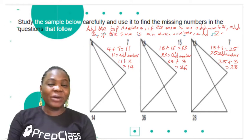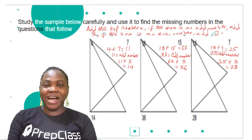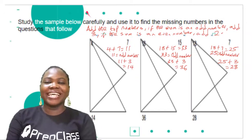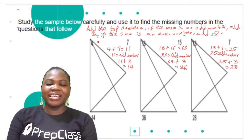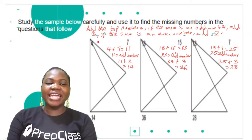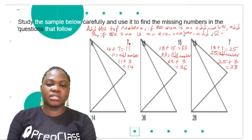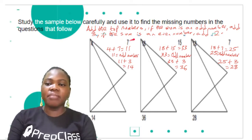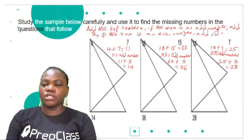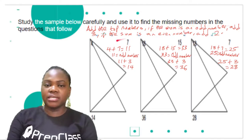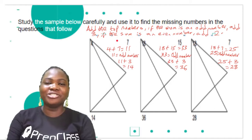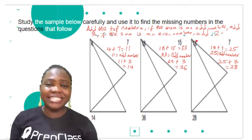I hope you've been able to do that. You will find out that you have to find the sum of the top numbers. Once you add the top numbers and the sum is an odd number, you add three. But if the sum is an even number, you add two. Very easy.